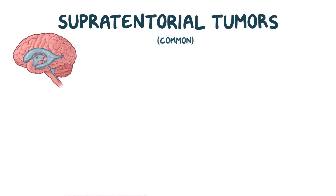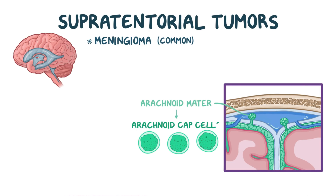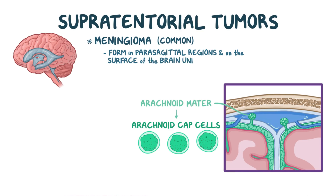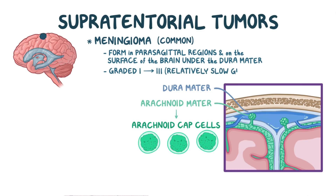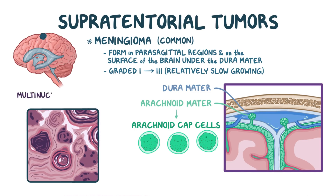Another common supratentorial tumor is a meningioma. Meningiomas come from cells found in the arachnoid mater of the meninges called arachnoid cap cells. They typically form in parasagittal regions and on the surface of the brain, just under the outermost layer of the meninges, the dura mater. They're graded 1 through 3 and tend to be relatively slow-growing. Histologically, they form nests of cells, or a multinuclear syncytium of fused cells, which have an appearance like a wave in the ocean. These tumors may also cause the formation of calcifications called psammoma bodies.